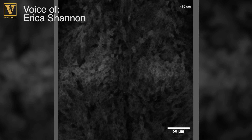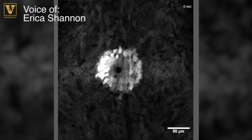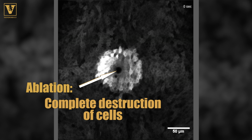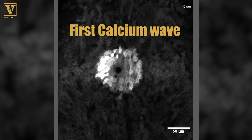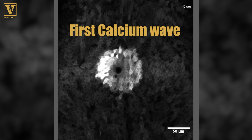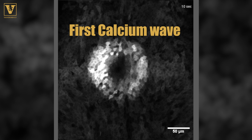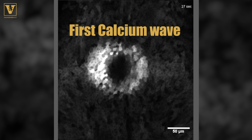What we saw is that immediately upon ablation, within the first frame of ablation, calcium was present in cells very far away from the wound. It wasn't immediately clear how calcium could be spreading from the wound site to those cells many rows back.